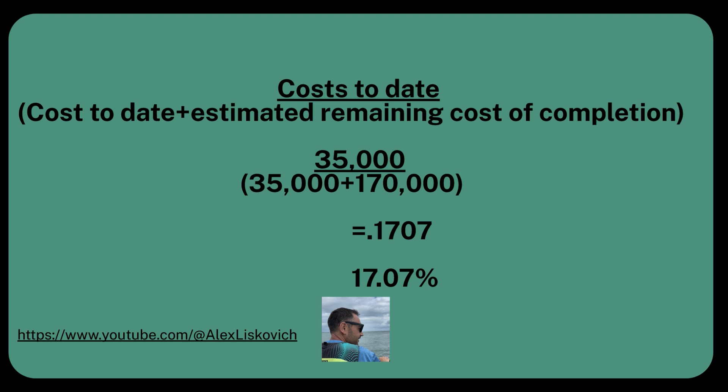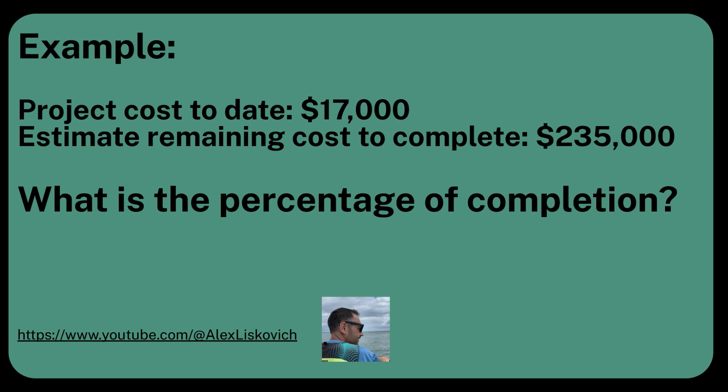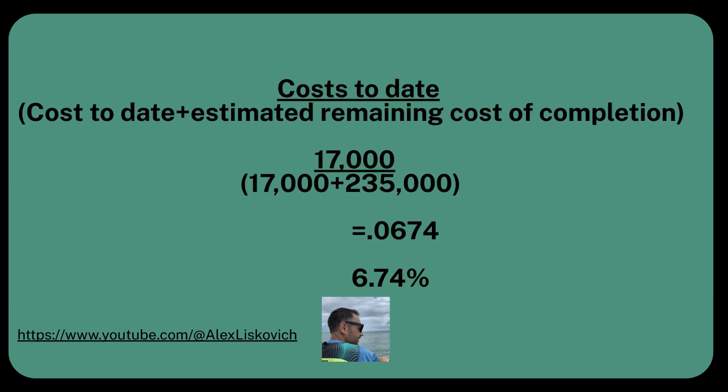Move the decimal two places or multiply by one hundred, and the percentage of completion is seventeen point zero seven percent. See — nothing to worry about, very basic stuff, and you don't even have to do it by hand because you've got a calculator. Let's do another one. Project cost to date: seventeen thousand. Estimated remaining cost to complete: two hundred thirty-five thousand. That's seventeen thousand divided by two hundred fifty-two thousand, which equals 0.0674 — so the percentage of completion is six point seven four percent.